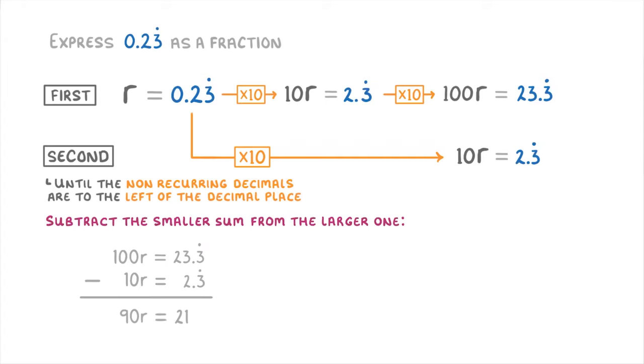Last we just need to rearrange this to get the r by itself, so we can divide both sides by 90 to get r equals 21 over 90.